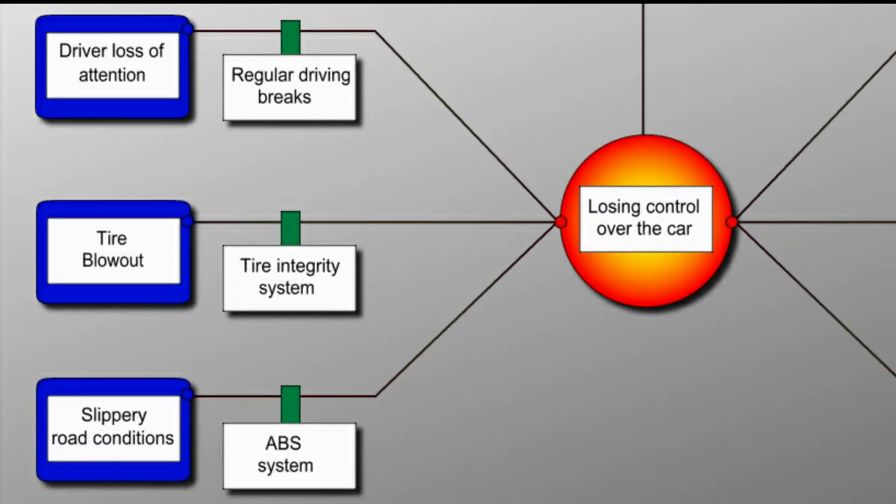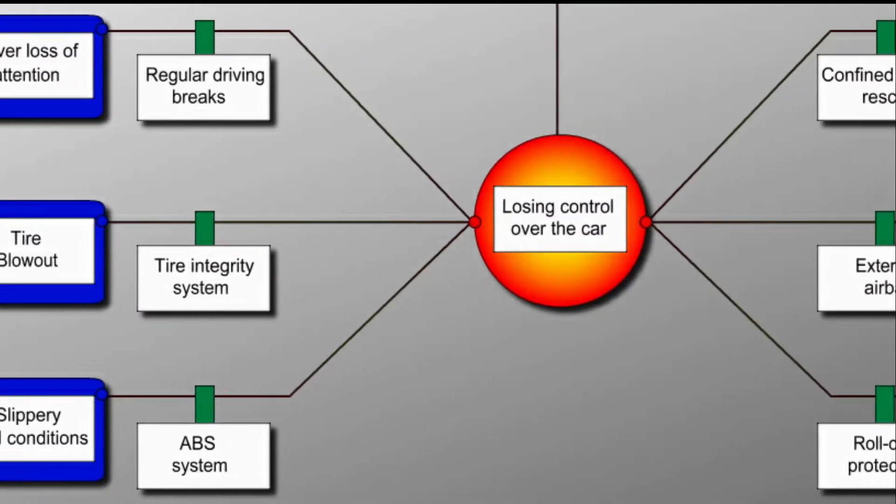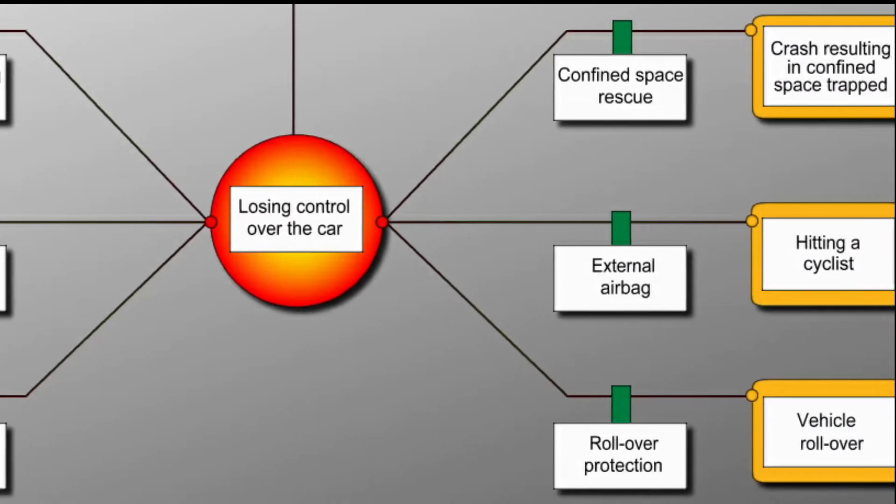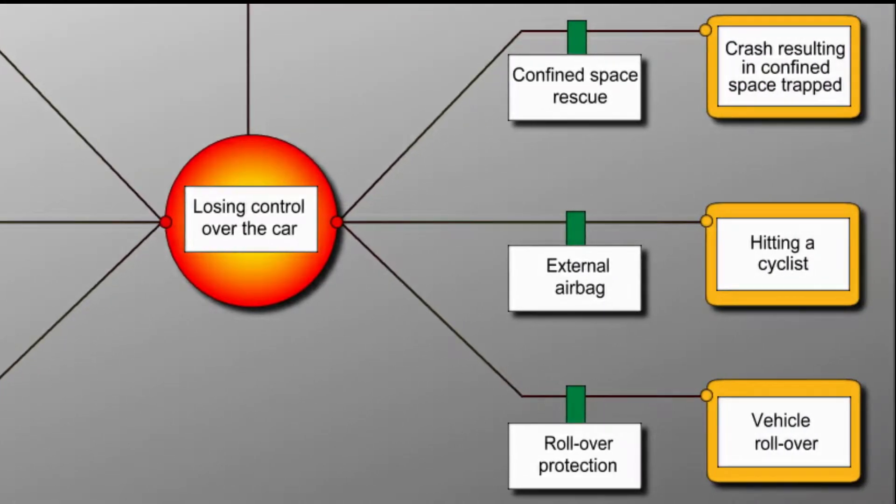In the unfortunate event of having lost control over the car, multiple different outcomes are possible. They are represented in red consequence boxes. For example, losing control over the car may result in a vehicle rollover.